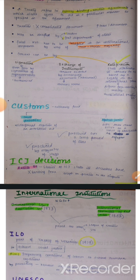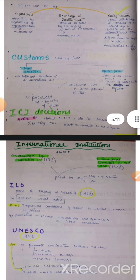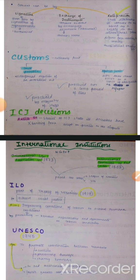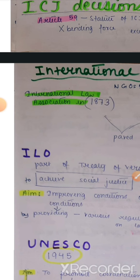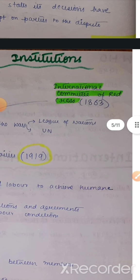After this we come to international institutions — jo UN ki kuch branches hain. There is the International Labour Organization, established in 1919. Then UNESCO. Then the Bretton Woods Twins — World Bank and IMF — established in 1944. Then ICJ. These are all branches of the UN. With the rapid decolonization of the world and the emergence of new sovereign countries, it gave rise to the notion of cooperation. In the 19th century we saw the emergence of many international non-governmental organizations — like the International Law Association, established in 1873, and the International Committee of the Red Cross, established in 1863. These paved the way for the League of Nations and UN.